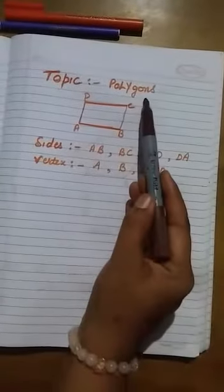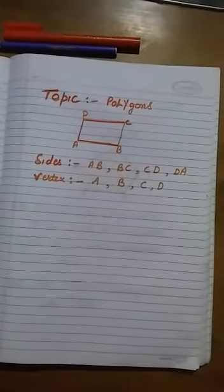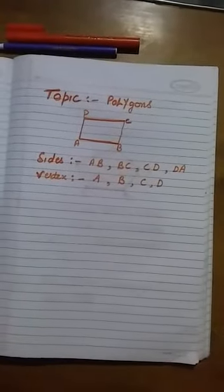Good morning students. Today our topic is polygons. So, what are polygons? Simple closed figure which is made by three or more than three line segments is known as polygons.